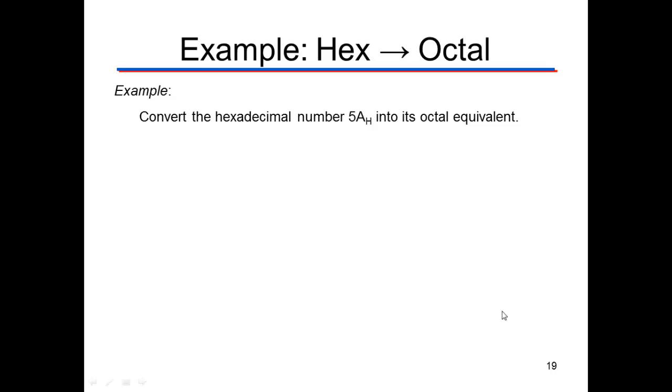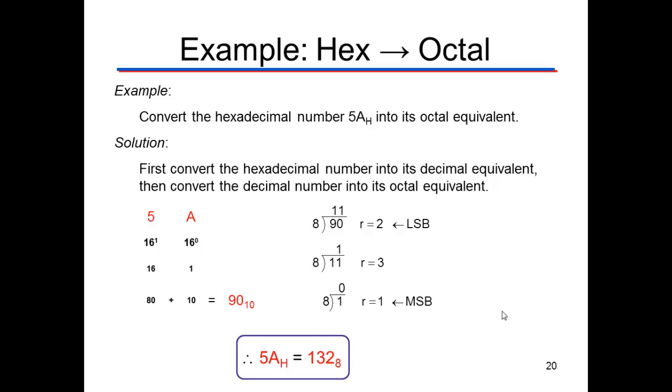So let's look now at going from hex to octal. If you want to take a number from hexadecimal to octal, you got to change it to decimal and then change that to octal. So if we take 5A, which works out to be 90 in decimal, then we have to go through and we use the weighted multiplication.